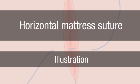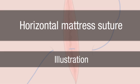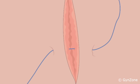Here you can see a horizontal mattress suture. The first stitch is made as an ordinary new suture.